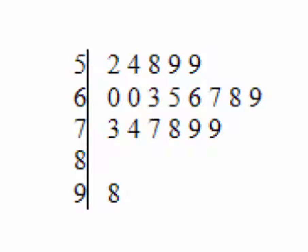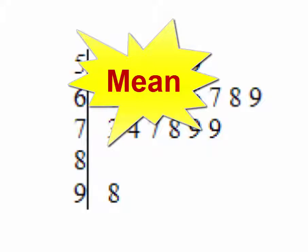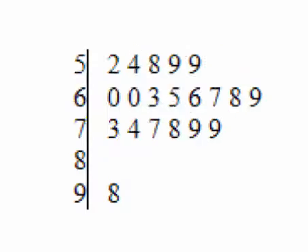The stem-and-leaf plot we're looking at represents the numbers from 52 to 98. We're going to take this stem-and-leaf plot and use it as the basis for finding things like the mean, the median, the quartiles, and so forth.